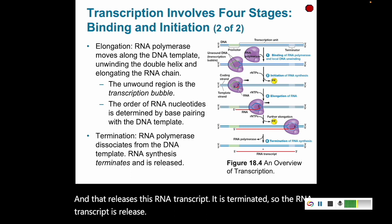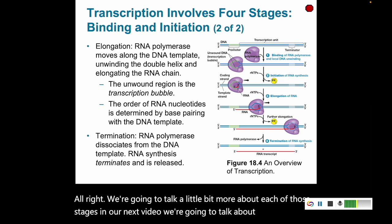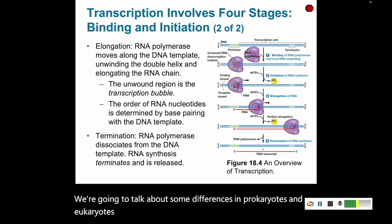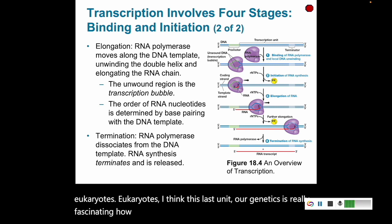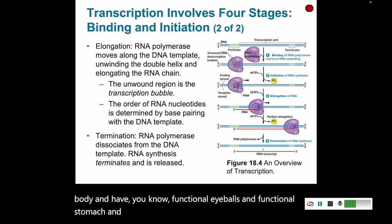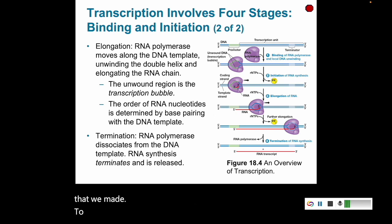We're going to talk more about each of those stages in our next video, as well as RNA processing that goes along with creating our messenger RNA and differences in prokaryotes and eukaryotes. I think this genetics unit is really fascinating — how we can have all this DNA in different cells of our body, with functional eyeballs, functional stomach, and functioning muscles that all have the same DNA and somehow create the RNA needed to have functional cells. We'll come back in our next video and talk about that. See you later!